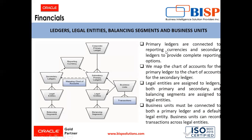Primary ledgers are connected to reporting currencies and secondary ledgers to provide complete reporting options. We map the chart of accounts for the primary ledger to the chart of accounts for the secondary ledger. Legal entities are assigned to ledgers, both primary and secondary, and balancing segments are assigned to the legal entities.